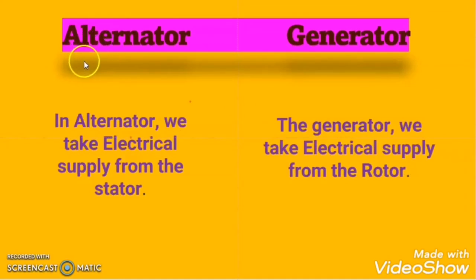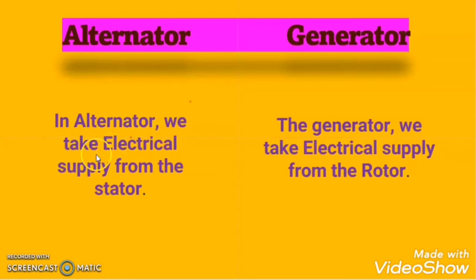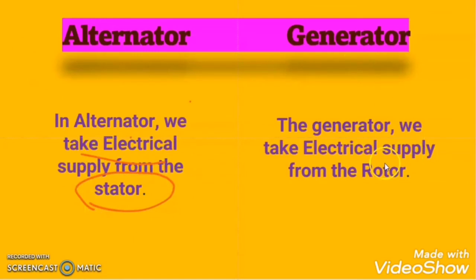Another difference between the alternator and generator is that in case of an alternator we are taking the electrical power supply from the stator, but in case of a generator we are getting the electrical power supply from the rotor.